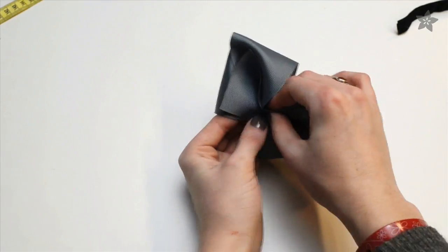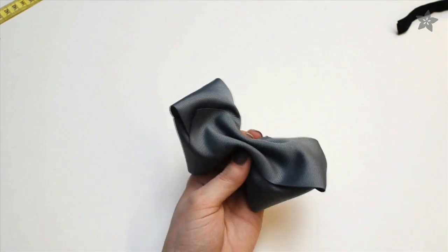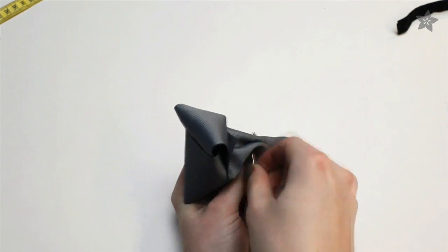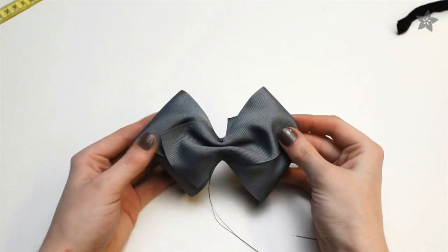To give the bow some volume, make a valley fold lengthwise, then turn down the edges in an accordion fold to make a pleat in the center of the bow. Secure it with a tight stitch through all of the layers of ribbon so it stays cinched.